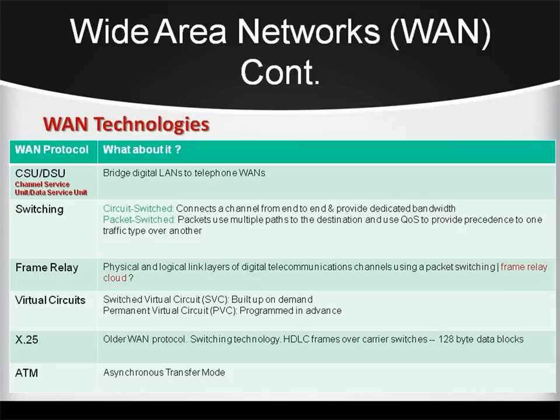There are two types of switching. Circuit switching provides dedicated bandwidth to point-to-point connections. Packet switching breaks data into packets, each sent individually, making unused bandwidth available for other connections and using quality of service to provide precedence to one traffic type over another. Frame Relay is a WAN protocol that operates at the data link layer, letting multiple companies and networks share the same WAN media. It uses DTE and DCE equipment; the Frame Relay cloud is a collection of these DCE service providers that provide switching and data communication functionality.